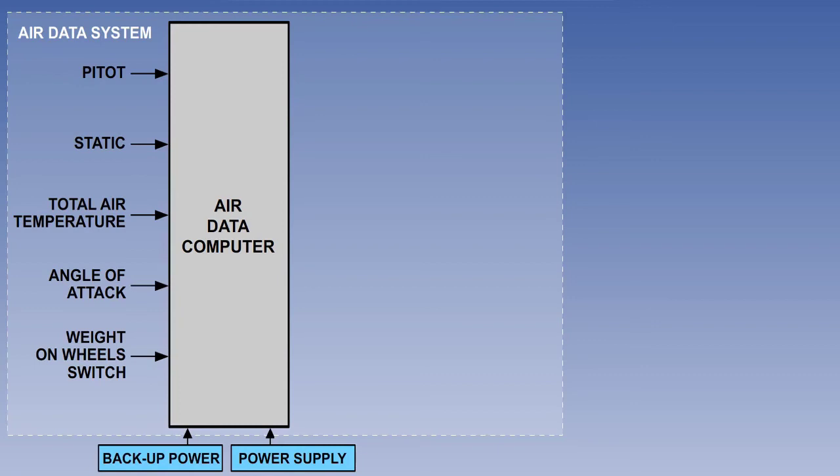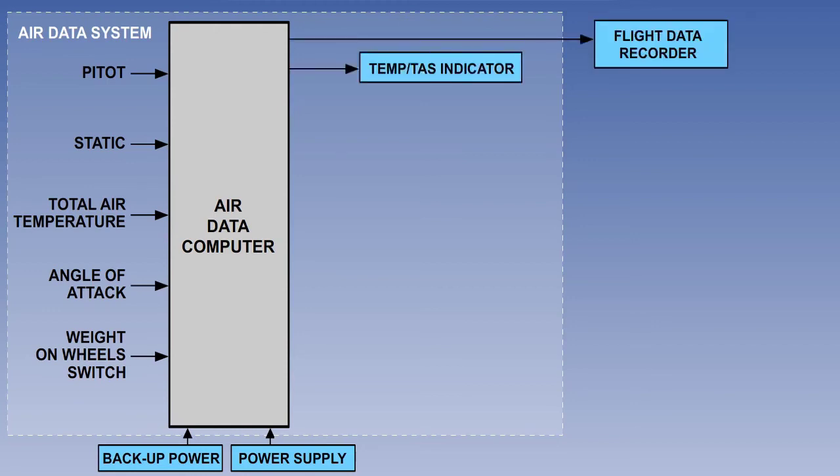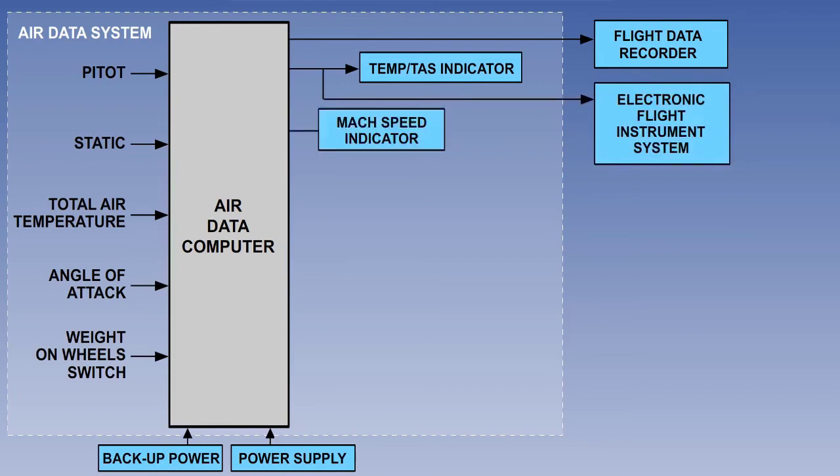All of the air data computer outputs are passed to the flight data recorder. Temperature and true airspeed outputs go to direct reading indicators and also for display on the EFIS. Similarly, Mach number and IAS, or more probably CAS, go to direct reading indicators.